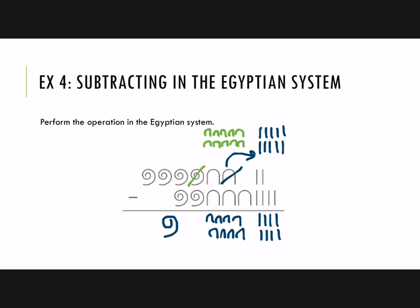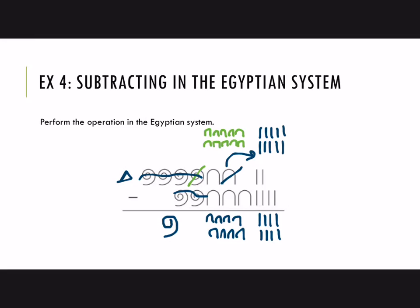One tip for doing these problems: make sure you are exchanging the correct things. For example, if we had lotus flowers instead of scrolls, those are worth 1,000. When you need to exchange for heel bones, you can't go directly from a lotus flower to heel bones. It would become ten scrolls first, and then you could take a scroll and turn it into heel bones. You can try the homework problem and the practice problems in the book. If needed, do the problem in our numbers first, then try using Egyptian symbols.